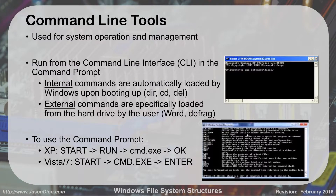Command line tools are used for different operations and management of the operating system. To get to the command line interface — the CLI, also known as the command prompt — go to Start > Run and type cmd.exe and hit Enter. If a command prompt shows C:\Documents and Settings\Jason, that's XP; if it shows C:\Users\Jason, it's Vista or 7. Internal commands are automatically loaded by Windows on boot — things like directory, change directory, and delete. External commands are loaded from the hard drive by the user, like defragmentation or Word.